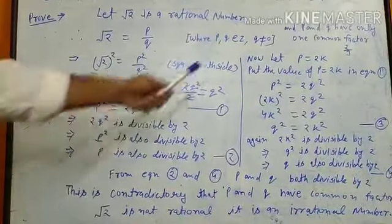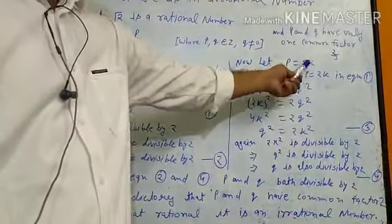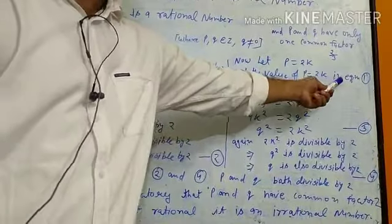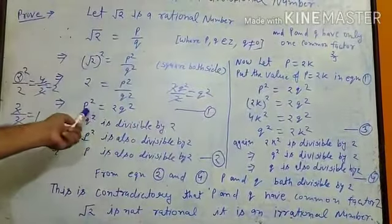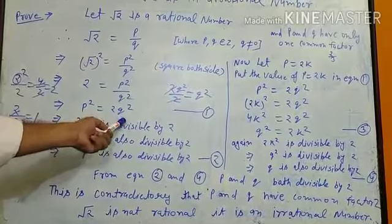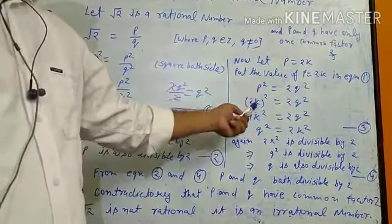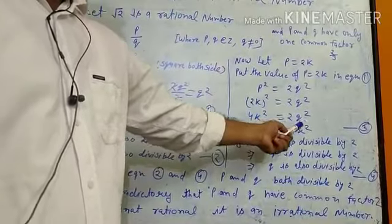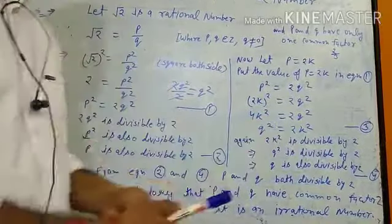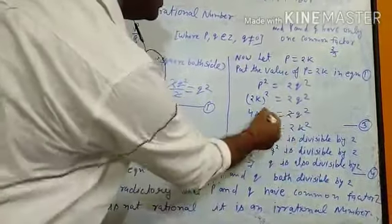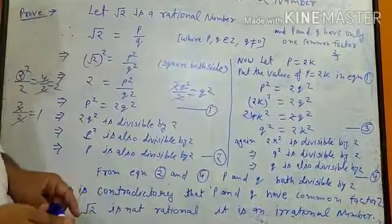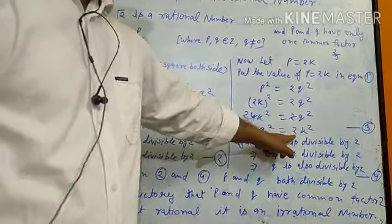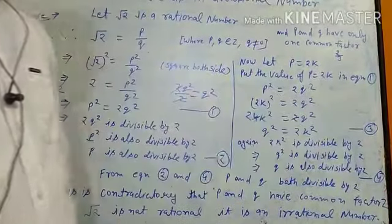Now let p equal 2k. Substituting p = 2k into equation number 1 (p² = 2q²), and squaring gives 4k² = 2q², which simplifies to 2k² = q². This is equation number 3.